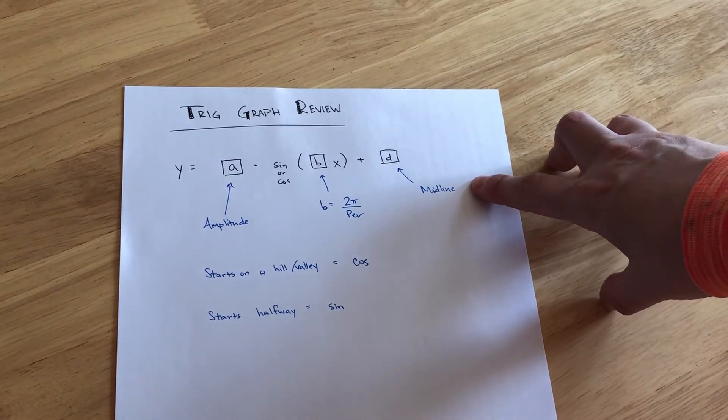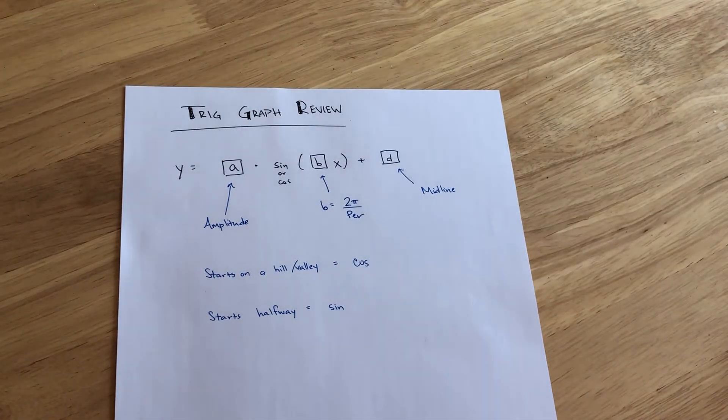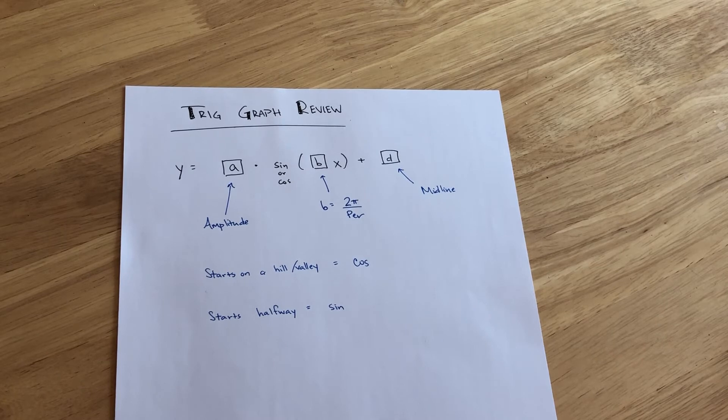Once again, where d is the midline, where a is the amplitude, where b is always 2 pi divided by the period, because it has to do with the frequency.